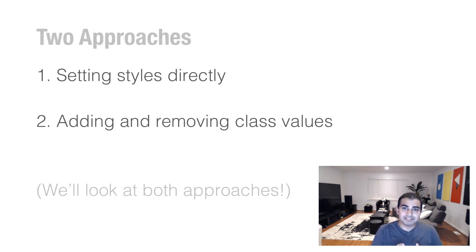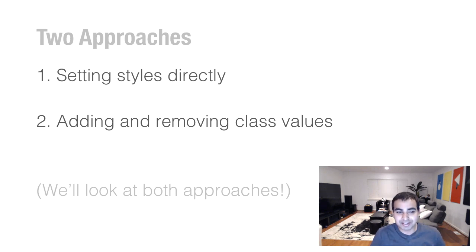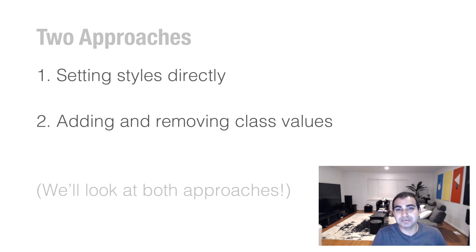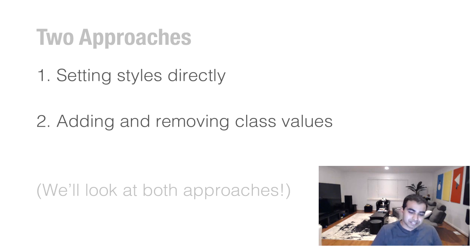There are two approaches you have for doing this. In JavaScript, one approach is you can set the style on an element directly — that's pretty cool. And the other approach, which I like to use a lot, is where you add and remove class values on an element and have the appropriate style rule then get applied. Let's look at both these approaches in a little bit more detail.